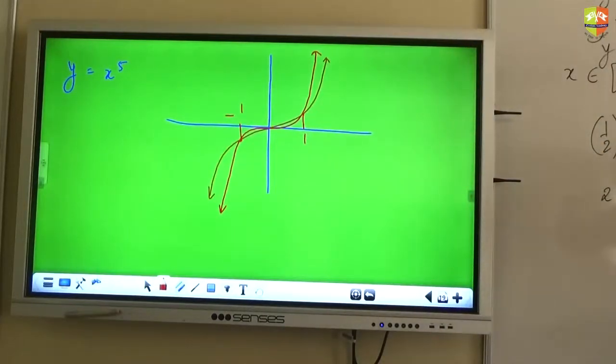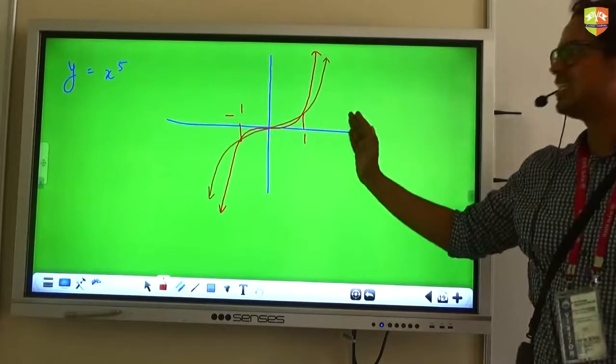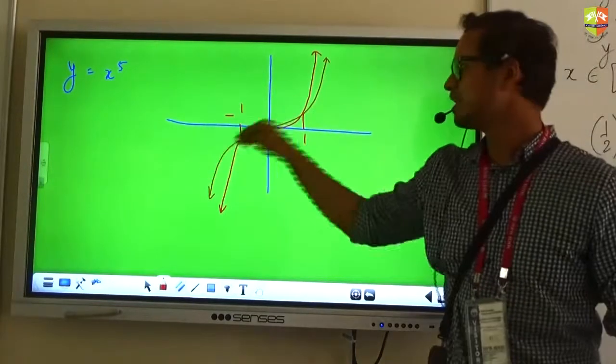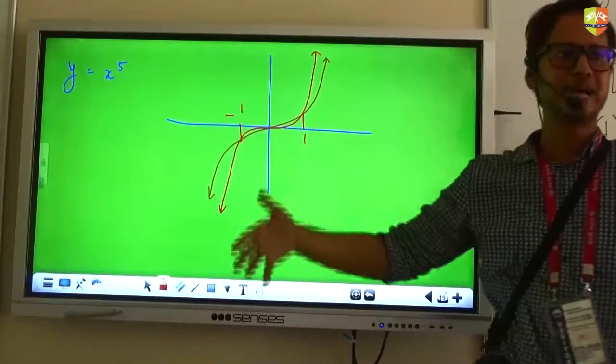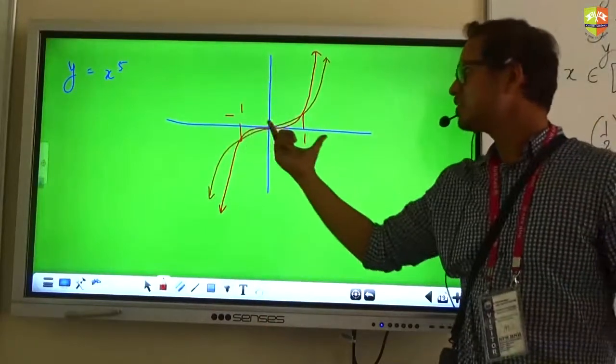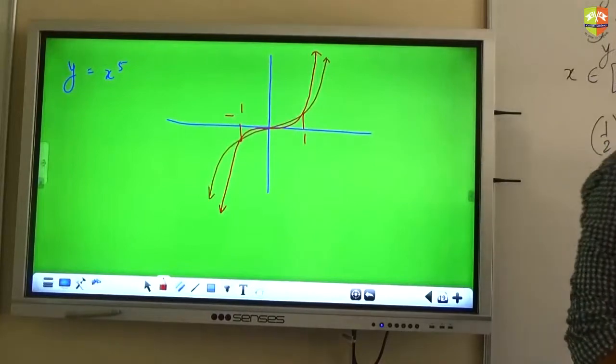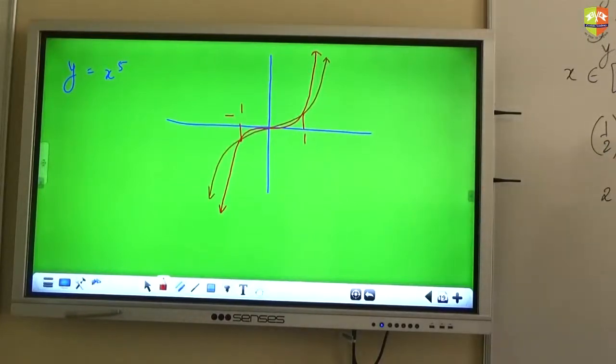So after 1, it starts dominating. Before minus 1, it starts dominating in terms of magnitude. But between minus 1 to 1, x cube is the boss. Are you getting this point? Okay, so let me show you again on GeoGebra graph.